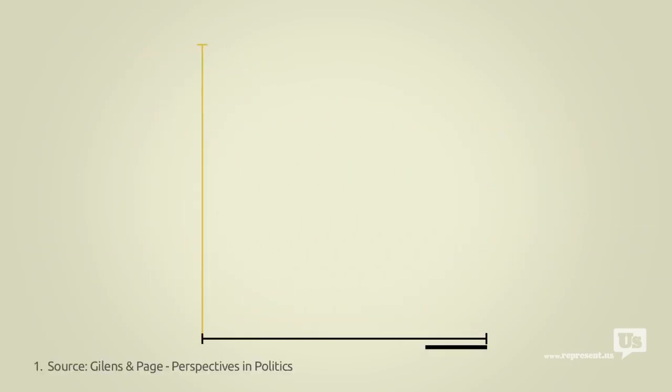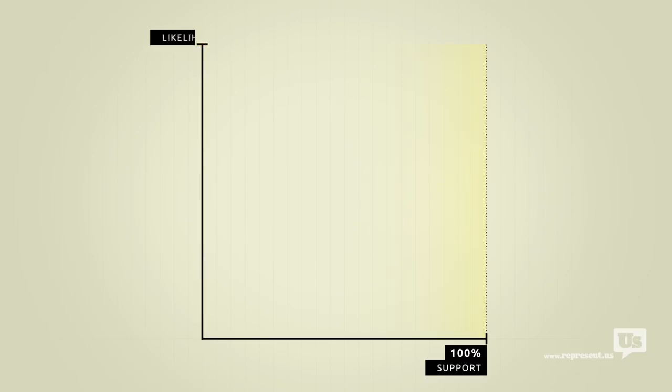This axis here represents public support for any given idea. On the left at 0% are ideas that not a single American wants. On the right at 100% are ideas that everyone supports. This axis represents the likelihood of Congress passing a law that reflects any of these ideas from a 0 to 100% chance.